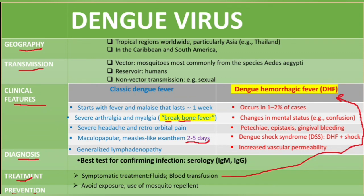For prevention, since dengue virus is transmitted by the Aedes mosquito, we can avoid exposure to mosquitoes. There is also a tetravalent attenuated live vaccine, which is recommended for children between the ages of 9 to 16 years who have been previously diagnosed with dengue virus.